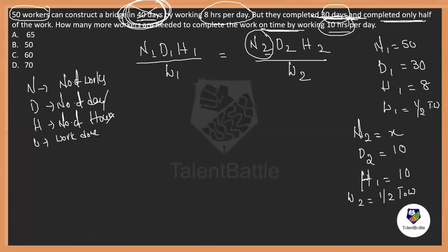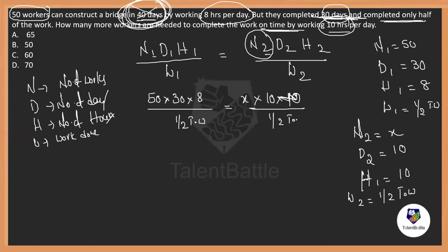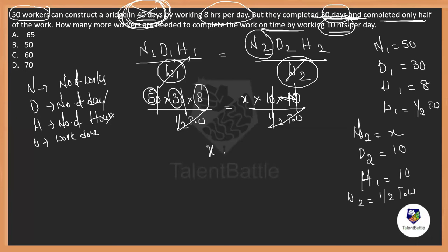Now substitute in the formula: 50 × 30 × 8 divided by half equals x × 10 × 10 divided by half. Since both sides have half of the total work, they cancel out. So 50 × 30 × 8 = x × 10 × 10. That gives us 12000 = 100x, so x = 120 people required in the second case.